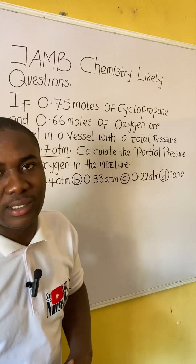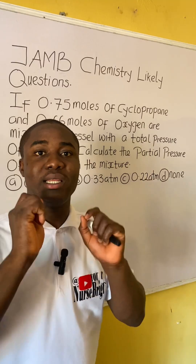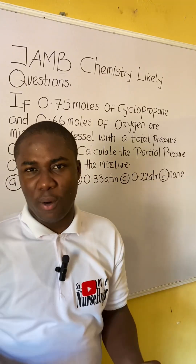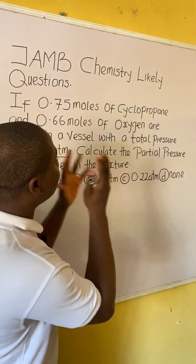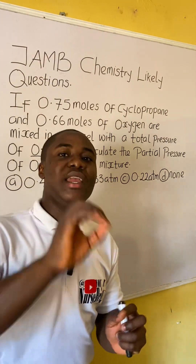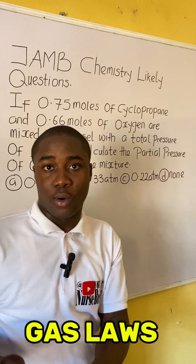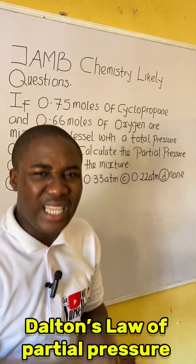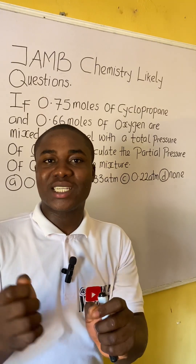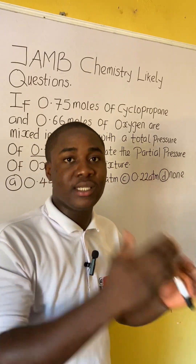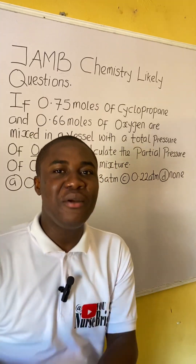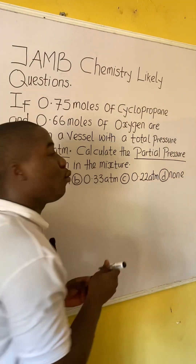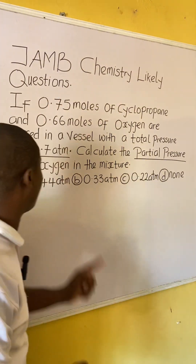This question is extremely easy. Before we solve any question in chemistry, it is important for us to understand the topic to which that question belongs. From the look of this, this practice question is on the topic called gas laws, specifically Dalton's Law of Partial Pressure. How did I know? I saw the term 'partial pressure' — they said we should calculate the partial pressure of oxygen.